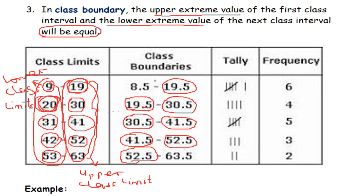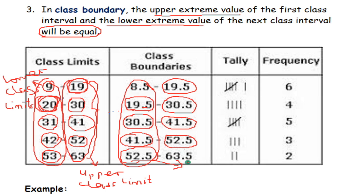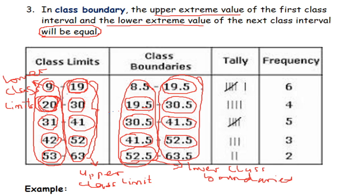Similarly, in class boundaries there are two class boundaries. All the beginning boundary values are the lower class boundaries, while all the ending boundary values are the upper class boundaries.